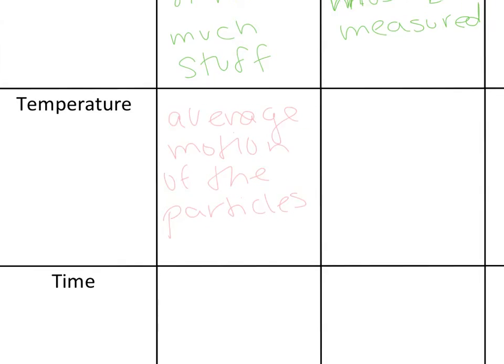Then we have temperature. Temperature is not how hot or cold something is, but it's the average motion of the particles. It's how fast our particles move. Its formula is T, capitalized for temperature, and we have to measure it.